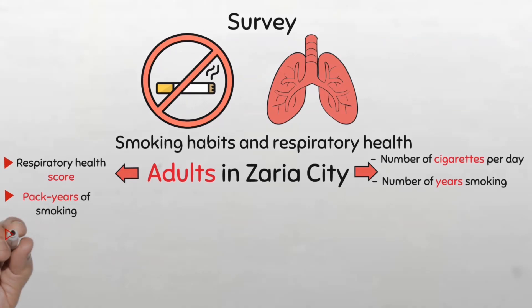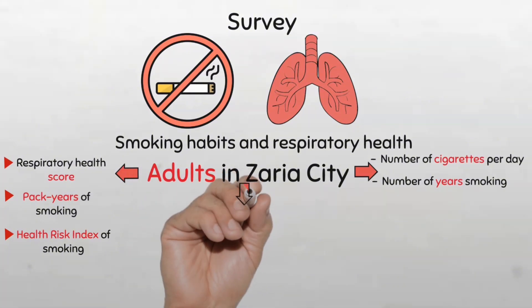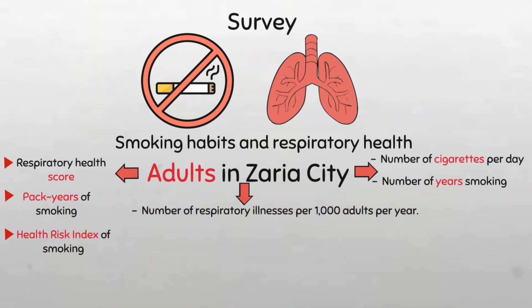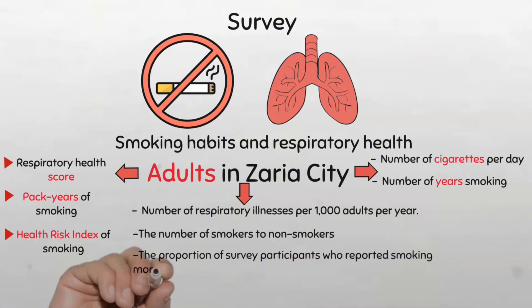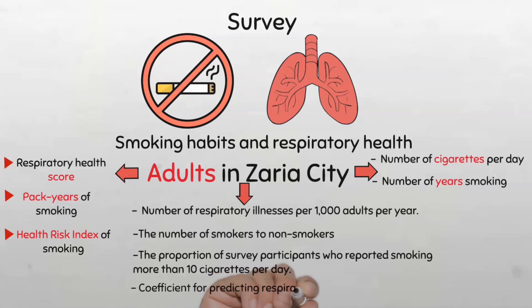He's broadly interested in creating an overall health risk index for respiratory diseases that combines factors such as smoking habits, environmental exposures, and genetic predisposition. At the end of this survey, he wants to know the following: The number of respiratory illnesses per 100 adults per year in the surveyed population. The number of smokers to non-smokers in the surveyed population. The proportion of surveyed participants who reported smoking more than 10 cigarettes per day and a coefficient for predicting respiratory health scores.